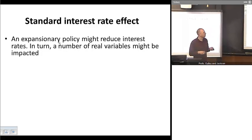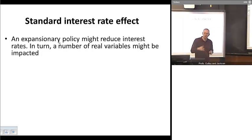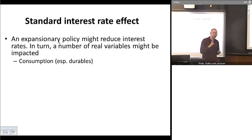So what we have first is the standard interest rate effect. And so we have an expansionary monetary policy, and that might reduce interest rates, especially real interest rates, through the economy. And we might, in turn, see a number of real variables impacted. For example, consumption, especially maybe the purchase of new automobiles, which are generally purchased with credit. And as interest rates fall, the demand for automobiles might rise.